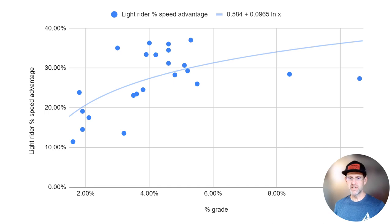I plotted the speed advantage versus the grade of the hill. At the lower grade, the speed advantage, at least for these two particular riders, is 10 to 20 percent. At the steeper grades, it's 25 to 35 percent.